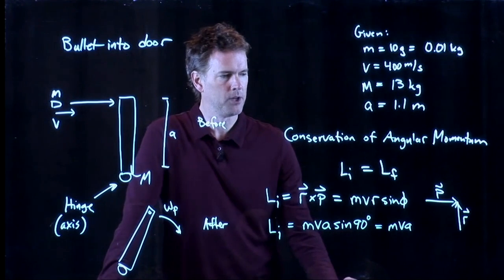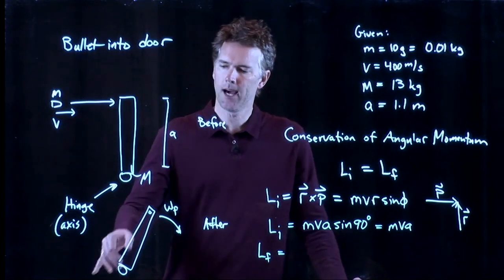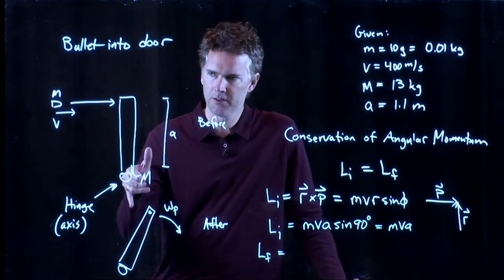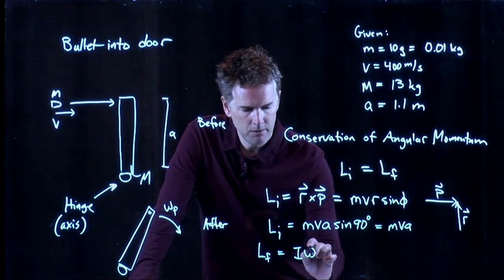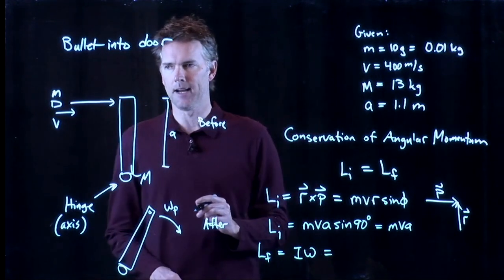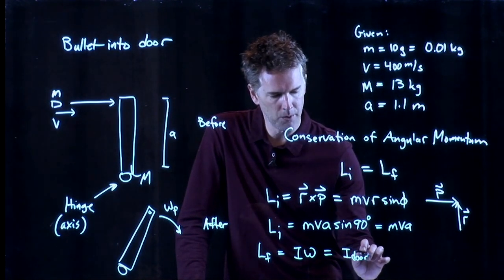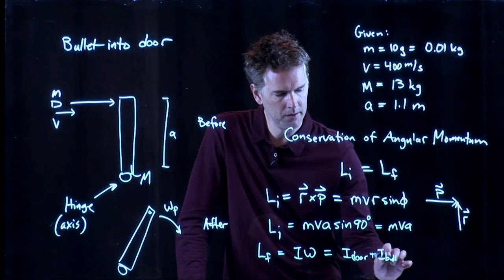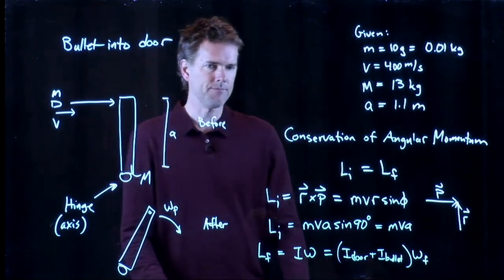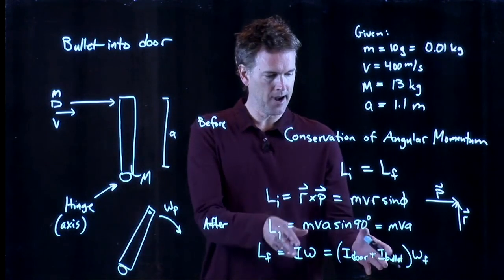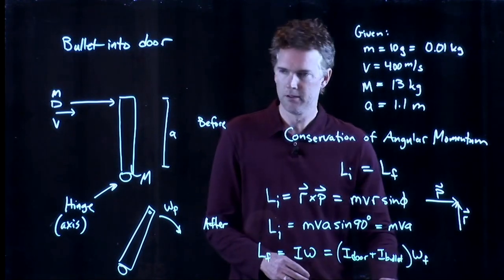What about the right side of this equation? Angular momentum finally. Well, now we have an object that consists of a door and a bullet in it. And it's rotating. We know that angular momentum is equal to I times omega. But I consists of two things. The door plus the bullet. And it's rotating at omega final. And now we need to figure out some of these moments of inertia. We can set it all equal. We can solve for omega final. So let's do that.